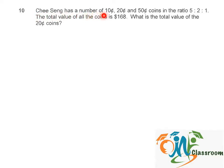Chee Seng has a number of 10 cents, 20 cents, and 50 cents coins in the ratio 5 is to 2 is to 1. The total value of all the coins is $168. What is the total value of the 20 cents coins?